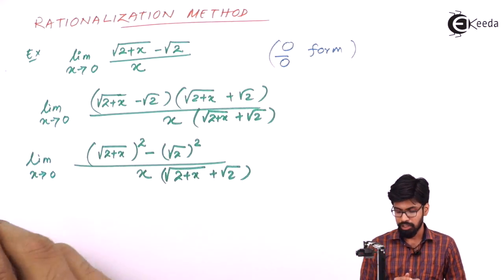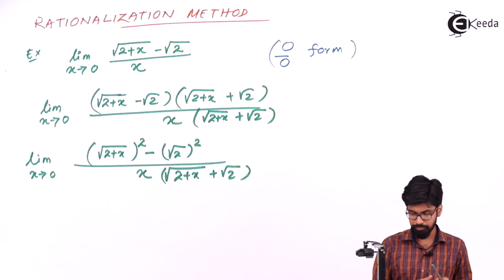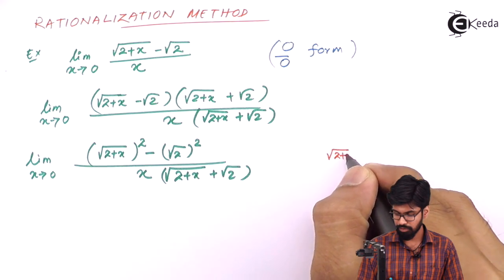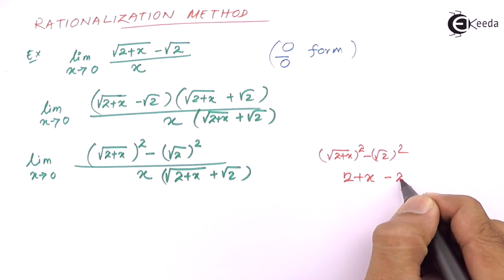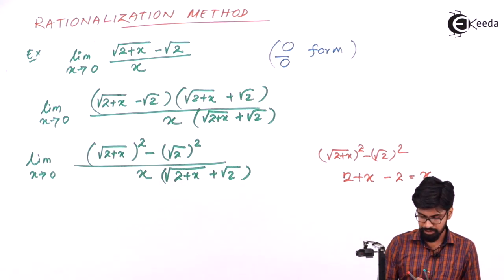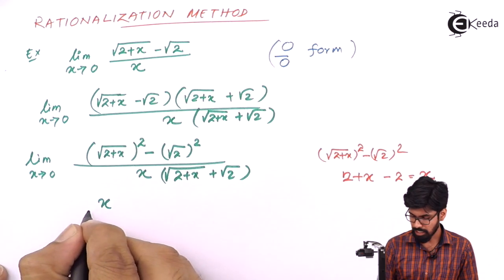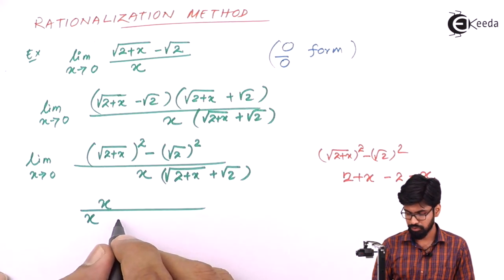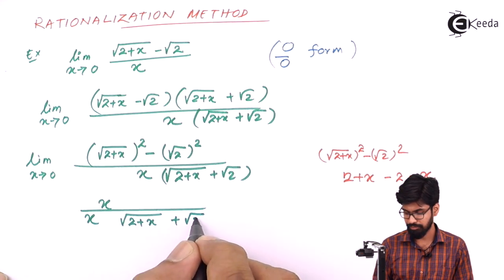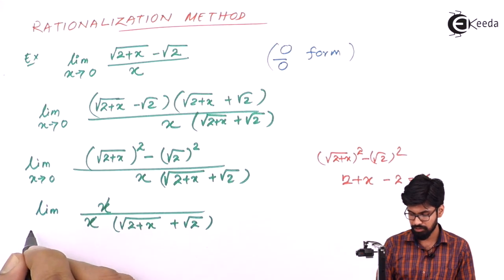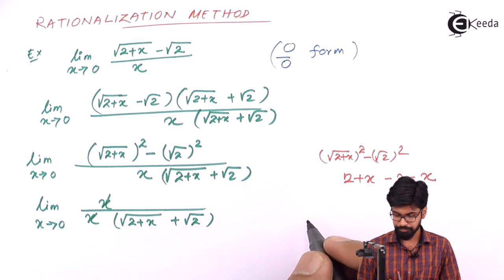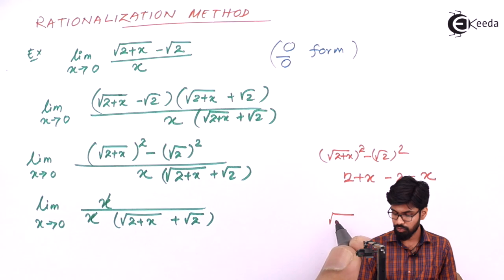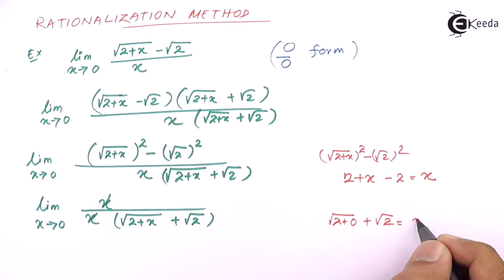Taking the limit as x approaches 0, the numerator becomes [√(2+x)]² − [√2]² = (2 + x) − 2 = x. So we can write the numerator as x, and we already have x in the denominator. Both x's cancel, and we are left with limit x approaches 0 of 1 / [√(2+x) + √2]. Substituting x = 0 gives 1 / [√2 + √2] = 1 / (2√2).